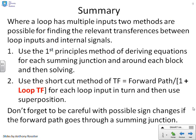So in summary, where a loop has multiple inputs, two methods are possible for finding the relevant transfer functions between the loop inputs and the internal signals. The first method is first principles, whereby you write all the equations at each summing junction and around each block, and then solve what you get. This can be tedious, but it is relatively straightforward. Alternatively, you can use the shortcut method, where the transfer function between two signals is forward path divided by one plus the loop transfer function, and then use superposition to add things together. Generally speaking, the second method is preferred, because with the first method, you tend to have to derive everything, whereas with the second method, you can derive a particular transfer function almost directly without having to concern yourself with what the others might be.